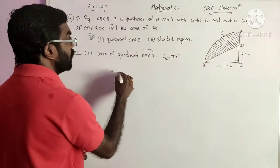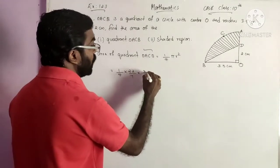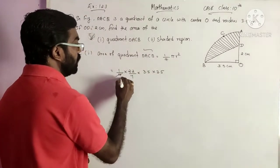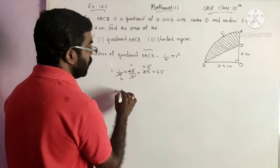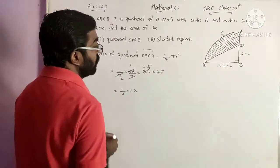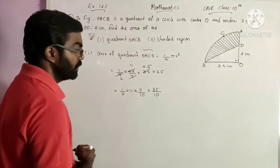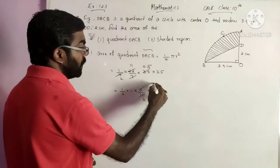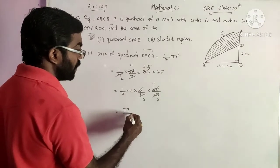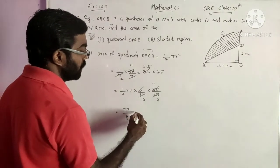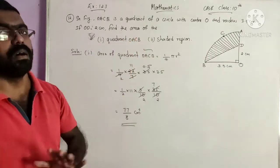Area of quadrant equals 1 by 4 into 22 by 7 into 3.5 into 3.5. We cancel factors: 1 by 2 into 11 into 0.5, writing 0.5 as 5 by 10 and 3.5 as 35 by 10. Cancelling 5 and 10, we get 11 into 7 divided by 2, giving 77 divided by 8 cm square. This is the area of quadrant OACB.